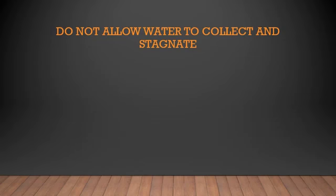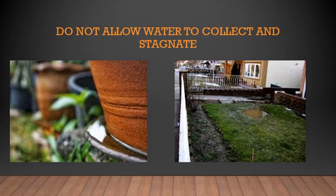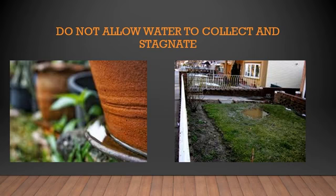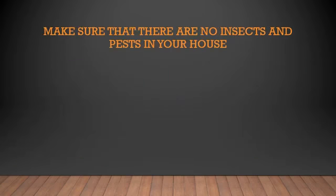Do not allow water to get collected or become stagnant. In your home, small amounts of water can collect under pots or in corners and remain stagnant. Stagnant water is a place where mosquitoes start growing, so to avoid the growth of mosquitoes, you should not allow water to collect.